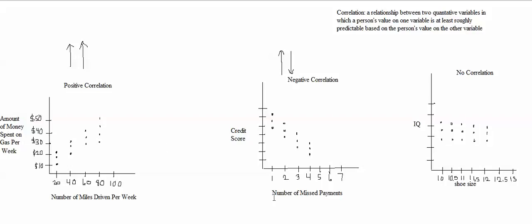If a person tells me how many credit card payments they've missed this year, but that person hasn't told me his or her credit score, I can use the number of missed payments to make at least a rough prediction of what their credit score is. For example, if a person tells me that they've missed zero payments this year, I'll think their credit score is probably pretty good — probably up at the high end.